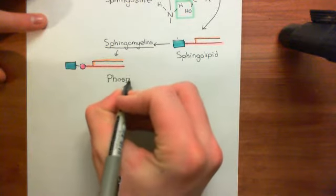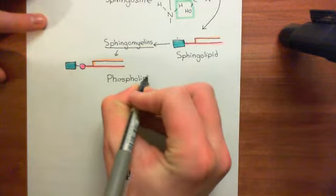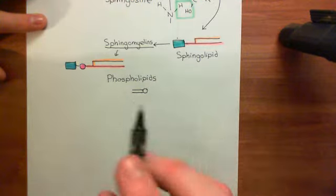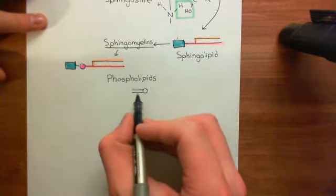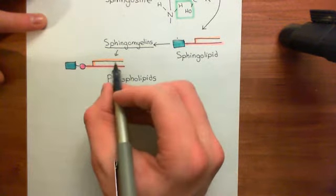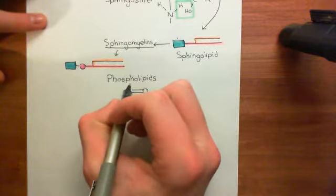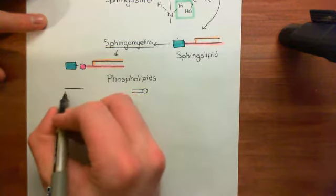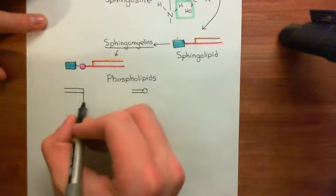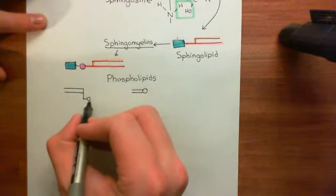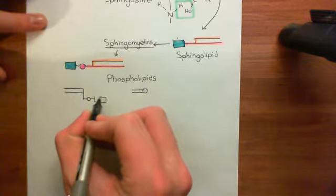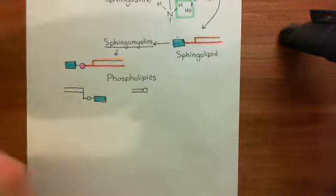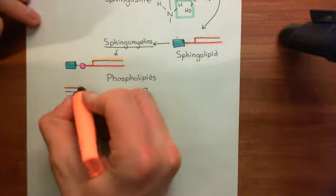People will often denote phospholipids with a simple cartoon because this covers both the phosphoglycerolipids and also the sphingomyelins, which are the main two examples of phospholipids. Looking at the structure of a phosphoglycerolipid: here are the two long-chain carboxylic acids, here is the glycerol molecule, here is the phosphate group, and here is the additional group. You can hopefully see that they have a very similar structure.